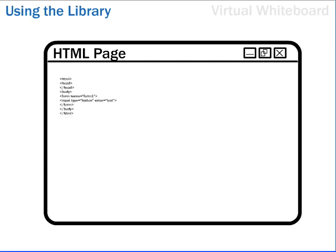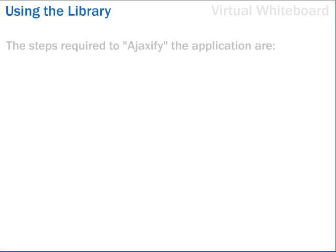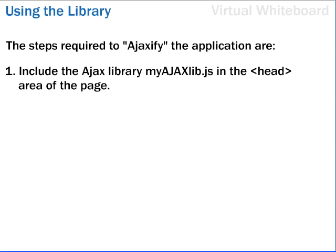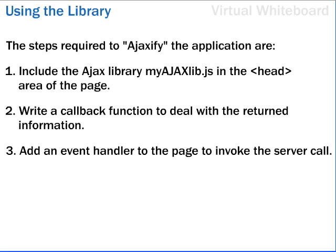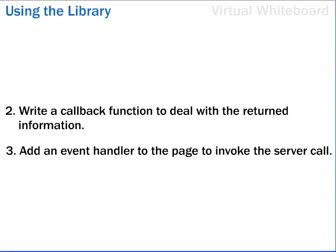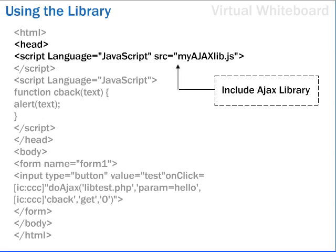This simple page displays only a button labeled TEST. All the functionality on the form will be created in JavaScript using our new Ajax library. The steps required to Ajax-ify the application are: 1. Include the Ajax library MyAJAXLib.js in the head area of the page; 2. Write a callback function to deal with the returned information; 3. Add an event handler to the page to invoke the server call. We'll start by demonstrating a GET request and using the information returned in the responseText property. Including the Ajax library is straightforward.